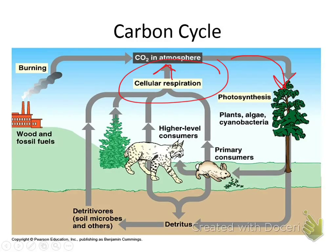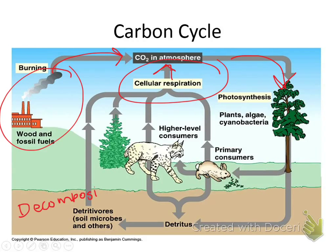Also, burning anything — burning wood, burning gas in your car. Burning of fossil fuels releases CO2. Decomposing animals and plants also releases CO2. So what releases CO2 is going to be fossil fuels, decomposition, and animals. What takes in CO2 is going to be autotrophs or plants. Autotrophs take in CO2 and make sugar. And that is the carbon cycle.